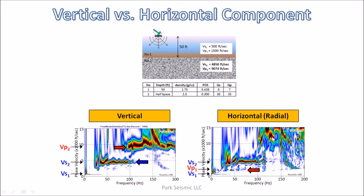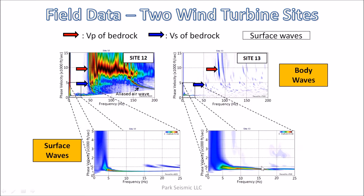So when we include radial component in modeling, the corresponding VP1 energy trend is imaged as shown. So far we have been considering only modeling data — now let's consider real field datasets.